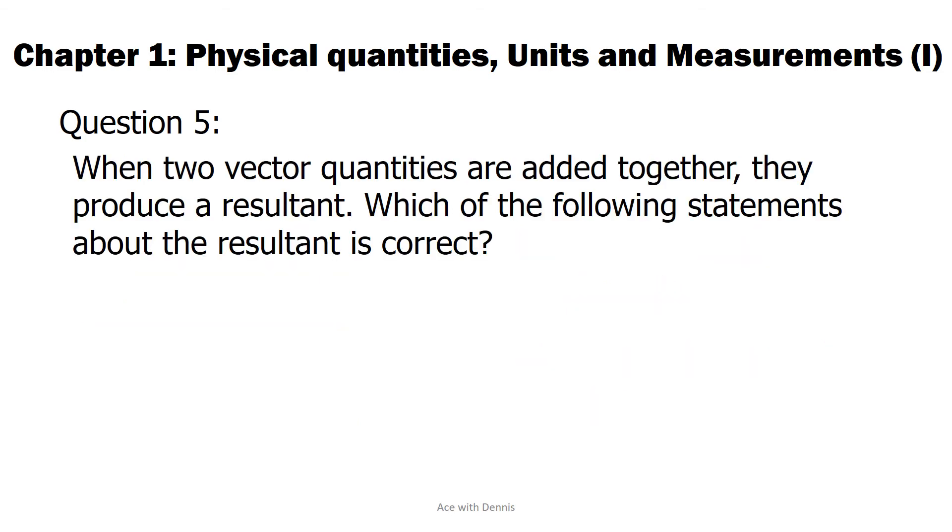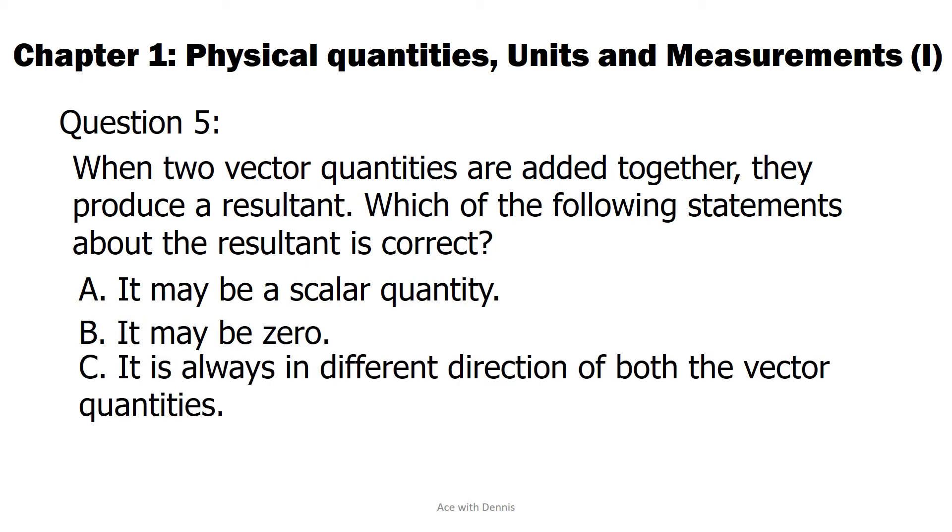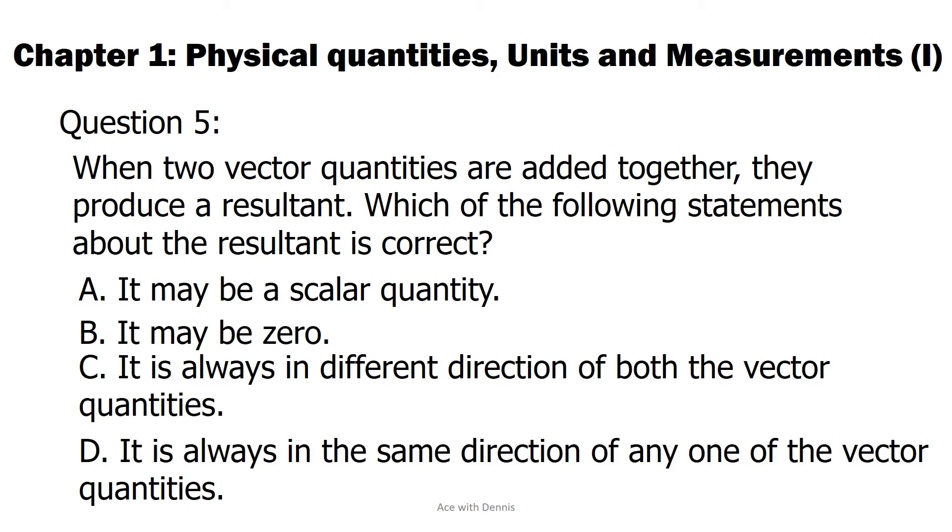Question 5: When two vector quantities are added together, they produce a resultant. Which of the following statements about the resultant is correct? A. It may be a scalar quantity. B. It may be zero. C. It is always in different direction of both the vector quantities. D. It is always in the same direction of any one of the vector quantities.